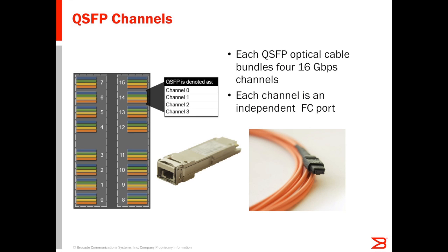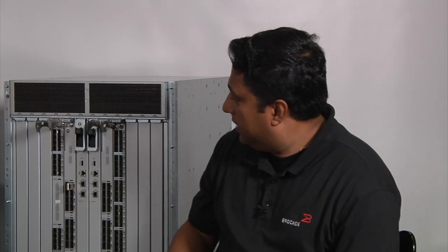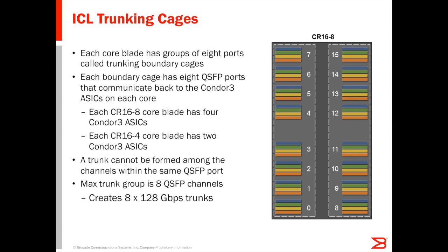Each quad SFP optical cable bundles four 16-gig links — four independent 16-gig fiber channel channels — for a total of 64 gigs per port. Each channel is an independent fiber channel port, so there are four independent fiber channel ports in each physical QSFP port. Looking at the core routing blade, each core blade has groups of eight ports called trunking boundary cages. Each boundary cage has eight QSFP ports that communicate back to the Condor 3 ASIC on each core routing blade, with up to four ASICs per blade depending on the model.